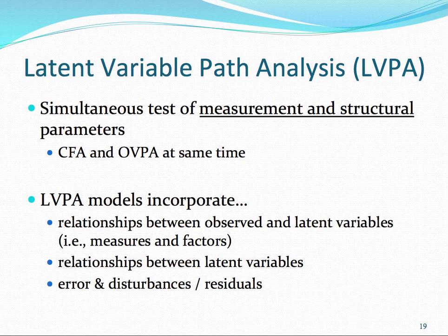Parameters also include our regression weights, error terms, residuals, and their associated beta weights. These are all things we need to estimate in structural equation modeling. You can think of latent variable path analysis as running both confirmatory factor analysis and observed variable path analysis at the same time.